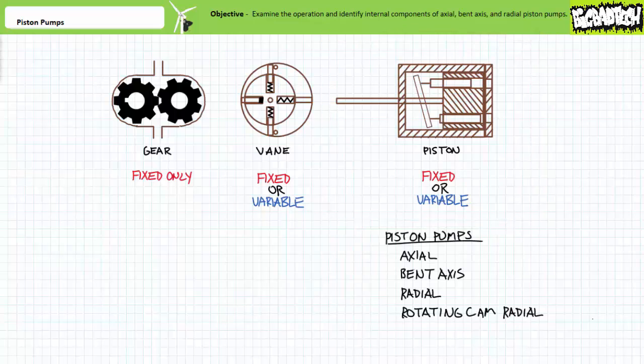Piston pumps, in addition to being categorized as fixed or variable displacement, can either be axial, bent axis, radial, or rotating cam radial piston pumps. We'll start with the axial piston pump since they're the easiest.